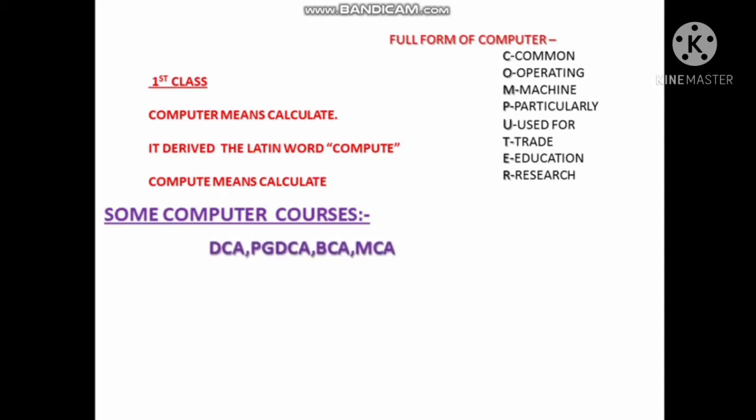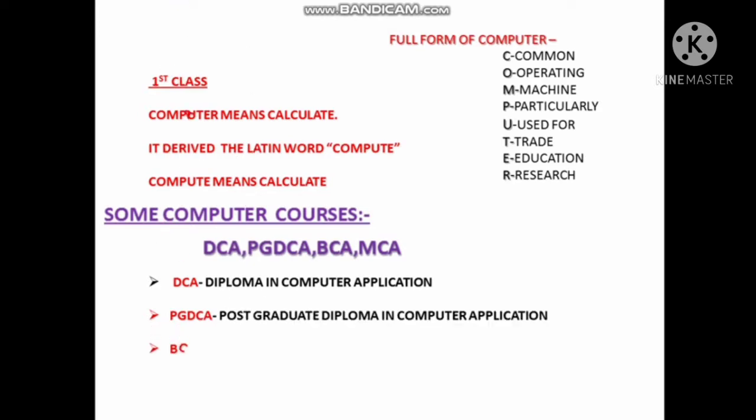Some special courses like DCA, PGDCA, BCA and MCA. DCA means Diploma in Computer Application. PGDCA means Post Graduate Diploma in Computer Application. After graduation we provide this course. BCA means Bachelor in Computer Application. And MCA means Master in Computer Application.